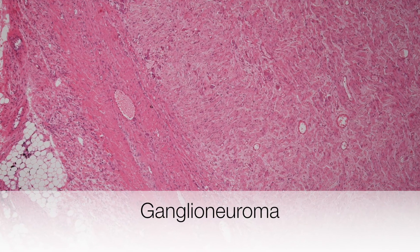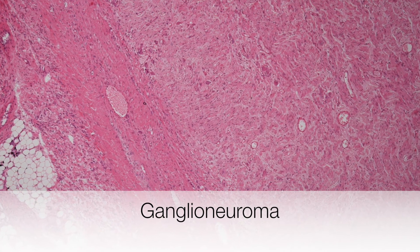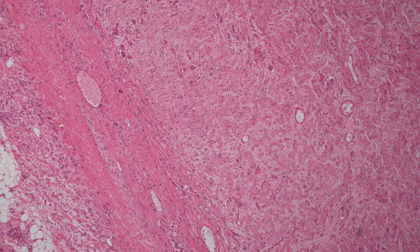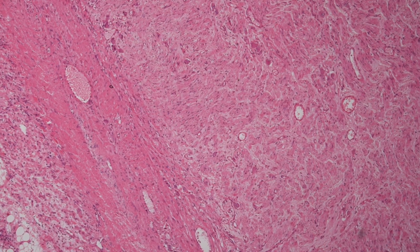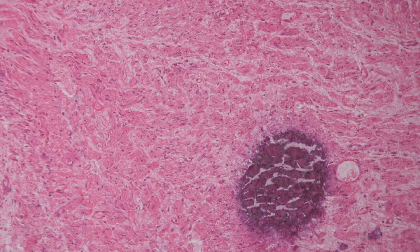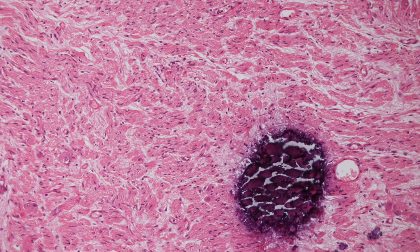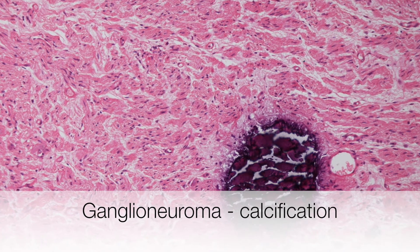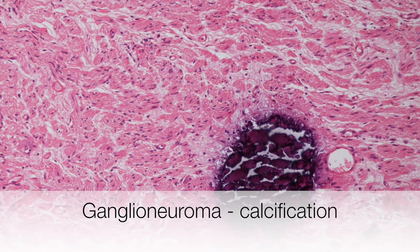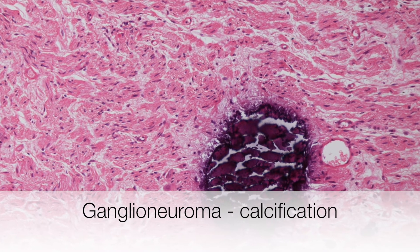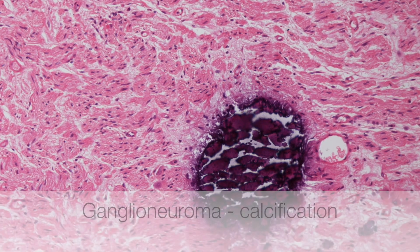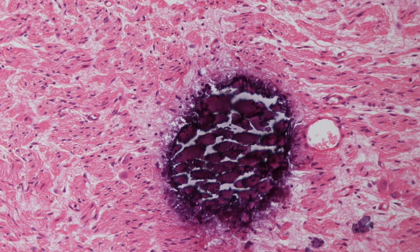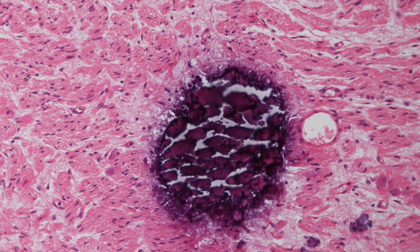Here is a low-power view of the histology of a ganglioneuroma. Here is a higher power of another field, and the purple area we are zooming into is an area of calcification that is present in approximately one-third of ganglioneuromas.